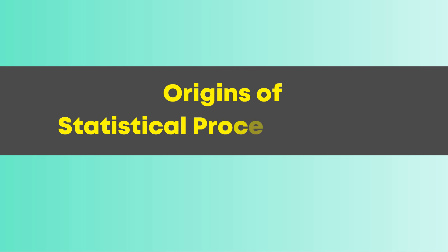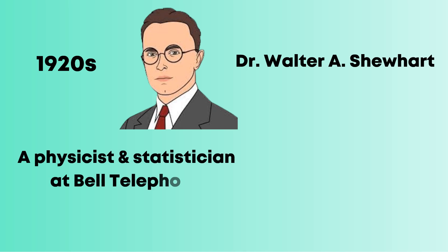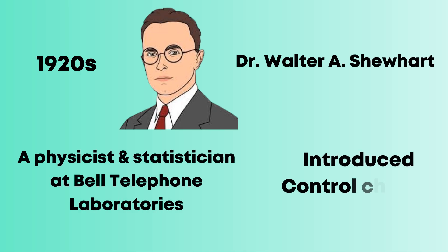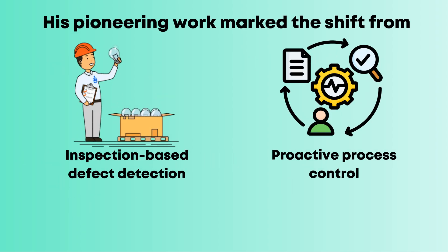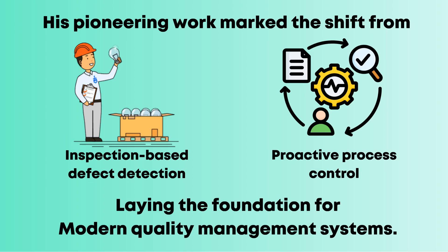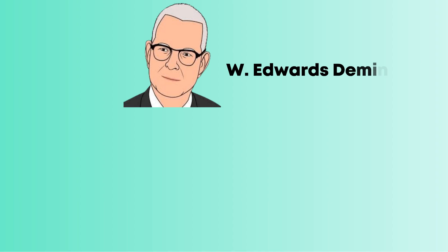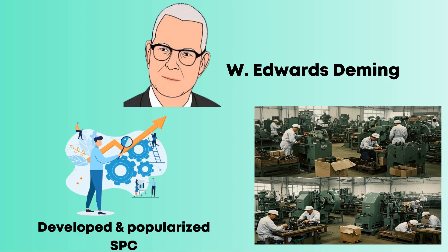The Origins of Statistical Process Control. SPC traces back to the 1920s when Dr. Walter A. Shewhart, a physicist and statistician at Bell Telephone Laboratories, introduced control charts. His pioneering work marked the shift from inspection-based defect detection to proactive process control, laying the foundation for modern quality management systems. Later, W. Edwards Deming further developed and popularized SPC, integrating it into Japan's postwar industrial resurgence.